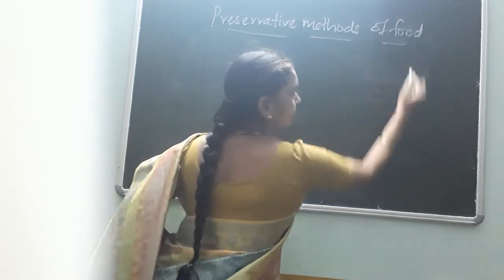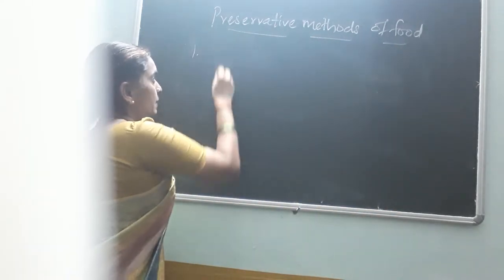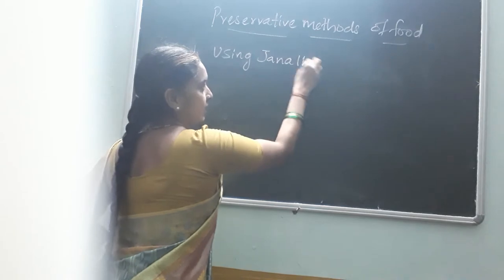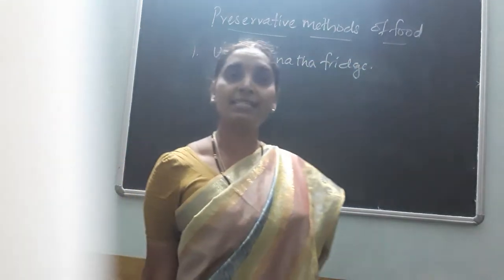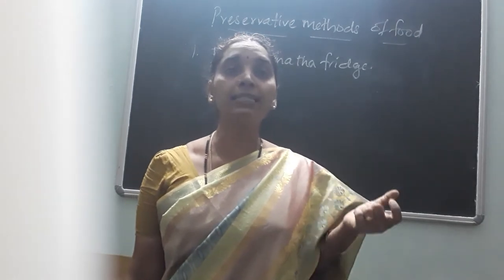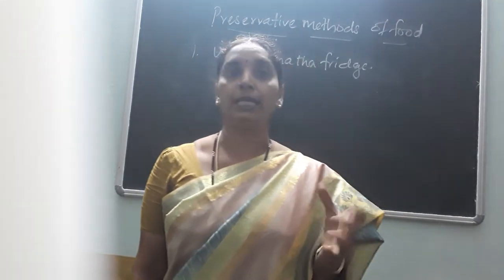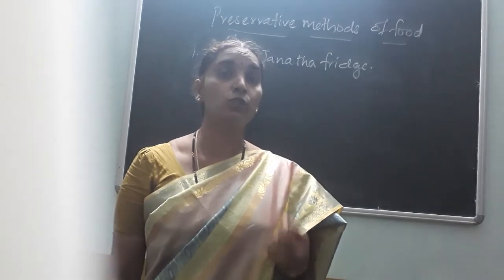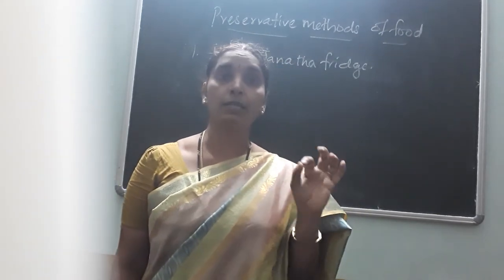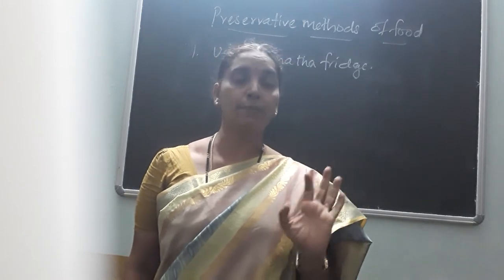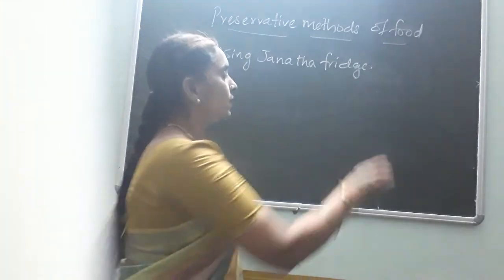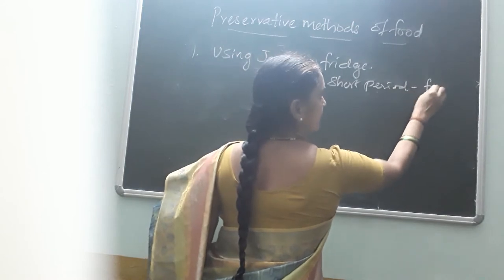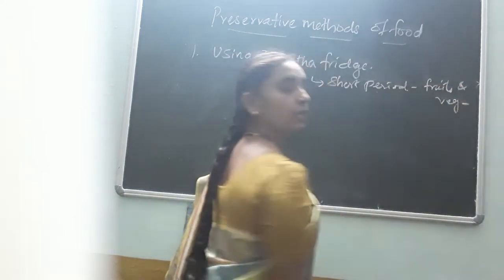The first method is using the janata fridge. I think you know it — in smaller classes itself we have learnt about it. It is an earthen pot, mattikunda. You can preserve certain fruits and vegetables in it, only for a short period. So this can be used for a short period. Examples are fruits and vegetables.